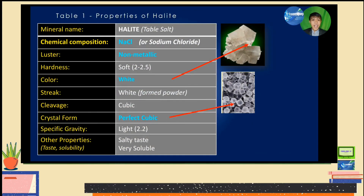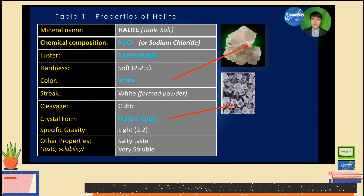Did you complete it? Here are the properties of halite on the table. Let's check your answers. The table salt has the following chemical composition or formula of NaCl or sodium chloride. Its luster is described as non-metallic. It is soft with 2 to 2.5 hardness. Color: white. Its streak or powdered form is also white. And we have here the shape or cleavage: cubic crystal form, perfect cubic. With a specific gravity of 2.2, and other properties: it is salty when tasted and very soluble.